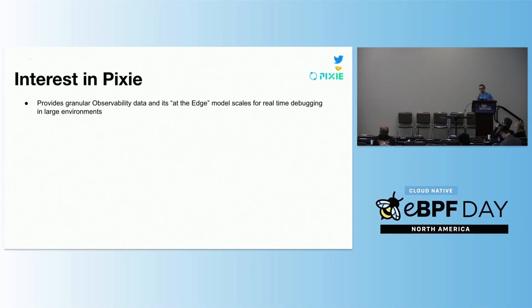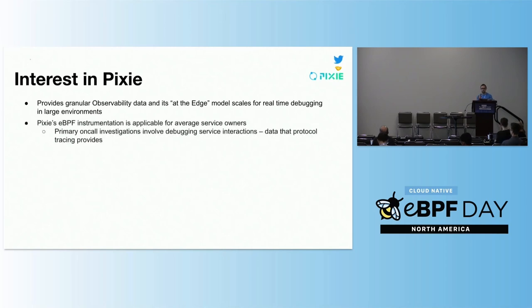Now that we've understood the background and some tactics for doing this protocol tracing, let's move on to Twitter's use case. We built out our TLS tracing on top of the Pixie project. The reason we were interested in Pixie is because it provides granular observability data and its edge model scales for real-time debugging. Many of the tools we provide are for service owners to understand their systems, and the data Pixie provides is very applicable — what they really want is to understand service-to-service interactions, which is data that protocol tracing provides.